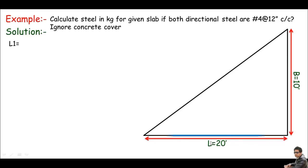Let me first calculate the length of the first bar — I'll call this L1. L1 is at the base of the triangular slab. The length of bar one is clearly just the full length of the triangle, which is 20 feet. So L1 equals 20 feet.